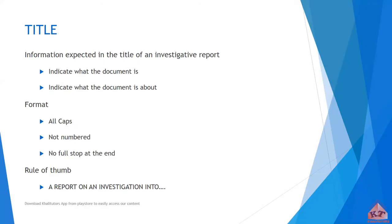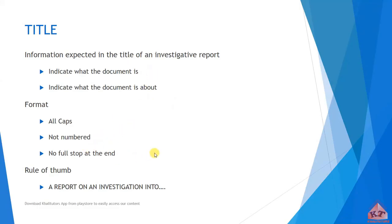The first thing is to indicate what the document is. After telling us what the document is, you will tell us what the document is about. In our case, you will tell us that this document is actually a report, and then you will also say it's a report on an investigation into something. So you're telling us what the document is and what it is about. Make sure that all the letters are in caps, make sure that your title is not numbered, and make sure that there is no full stop at the end of your title.